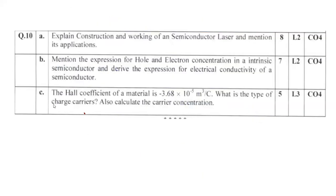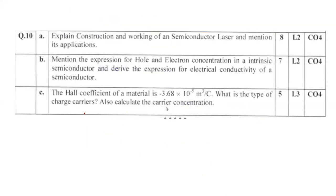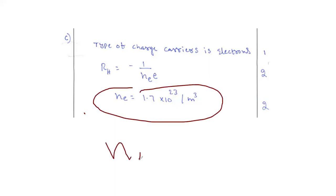Question 10c: The Hall coefficient of a material is −3.68 × 10⁻⁵ m³/C. What is the type of charge carrier? Also calculate the concentration. The type of charge carrier is electrons, since the coefficient is negative — this carries one mark. Using R = −1/(N_e · e), you can compute the value of N_e, which carries two marks.